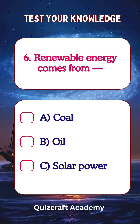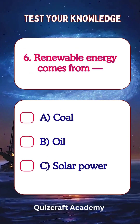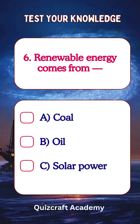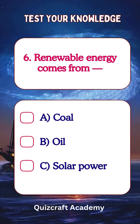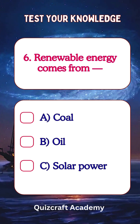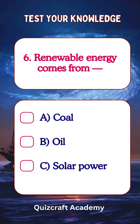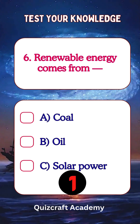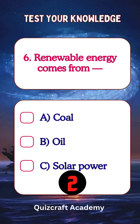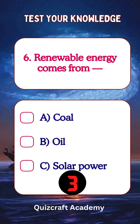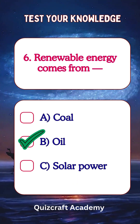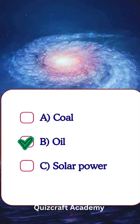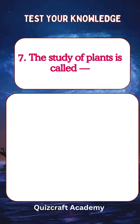Renewable energy comes from: a. coal, b. oil, c. solar power. Answer: solar power.